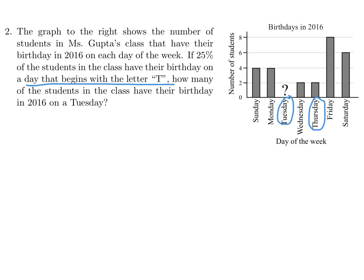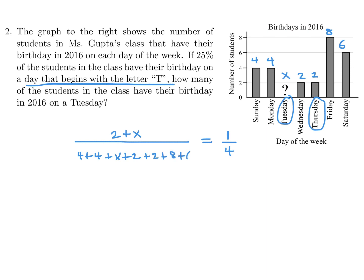Thursday looks like it's 2, and Tuesday we don't know, so we'll call it x. That means 2 plus x over the total equals 25%, or 1 over 4 as a fraction. The total is 4 plus 4 plus x plus 2 plus 2 plus 8 plus 6. So the algebra is pretty straightforward — just cross multiply: 2 plus x times 4 equals that whole sum.